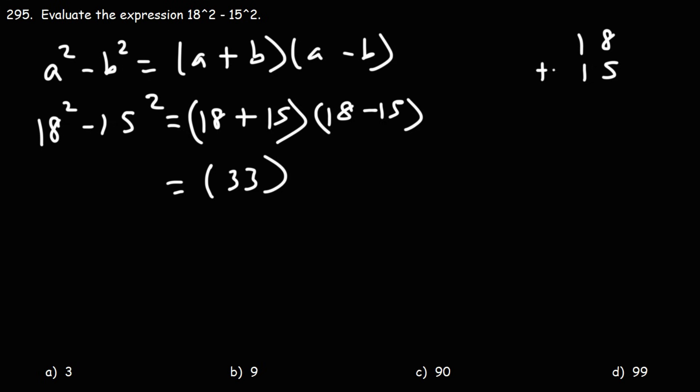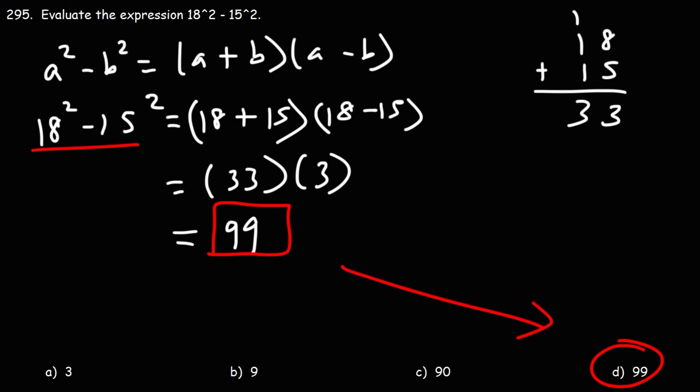And then 18 minus 15 is 3. 33 times 3 is 99, so this is the answer. That's 18² - 15² = 99, so D is the right answer.